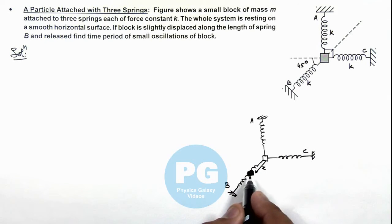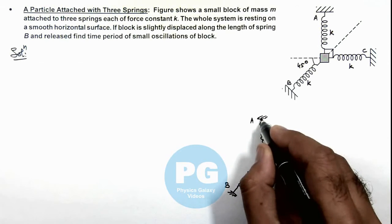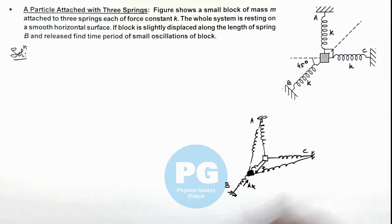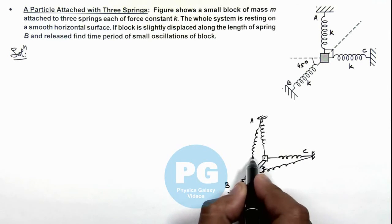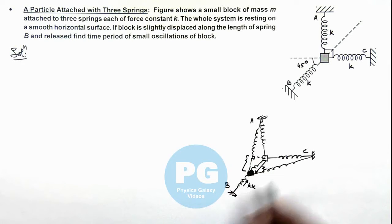If it is displaced by x, we can see spring B will compress by x and will exert a force kx onto the block along its length. The other two springs will get elongated as well as inclined from their initial position. To find the elongation in spring length from the initial position, we can drop a perpendicular. This would be the elongation in the length of spring A, and this would be the elongation in spring C, which are equal.